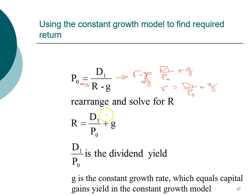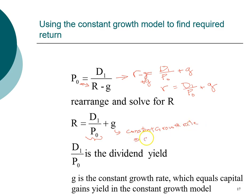We have two terms here. The first term — dividend in year one divided by price in year zero — is the dividend yield, similar to the current yield in bond valuation. This is a recurring return you earn each year as long as you hold the stock. The second part is the constant growth rate. In the constant growth model, this growth rate is actually equal to the capital gains yield — how much the price of the stock will increase. This is true only in the constant growth model, but it's useful to recognize that return has two components: an income component and a capital gains component.